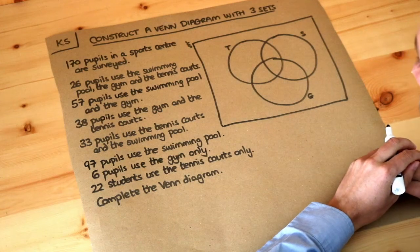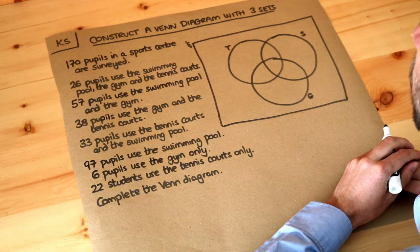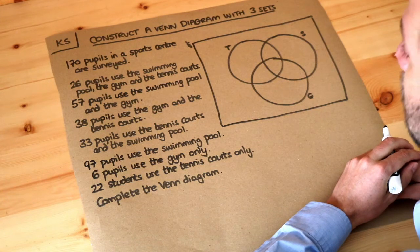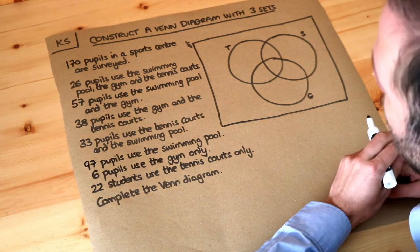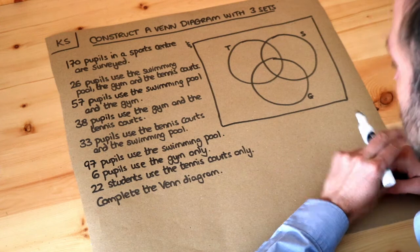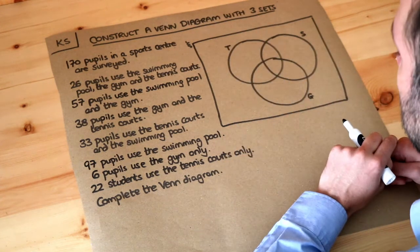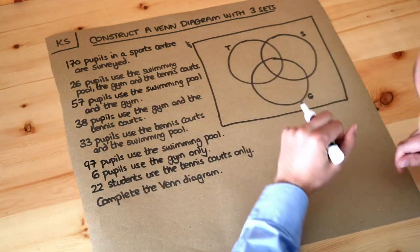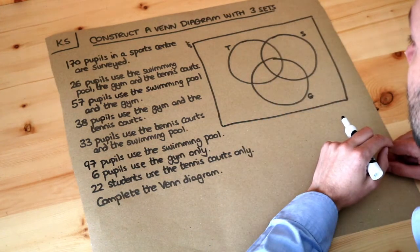Hello and welcome to this Dr. Ross Mass's key skill video on constructing a Venn diagram with three sets. In the previous video on Venn diagrams with two sets, we saw that Venn diagrams are a nice graphical way of representing sets and how sets overlap. A set is just a collection of items.